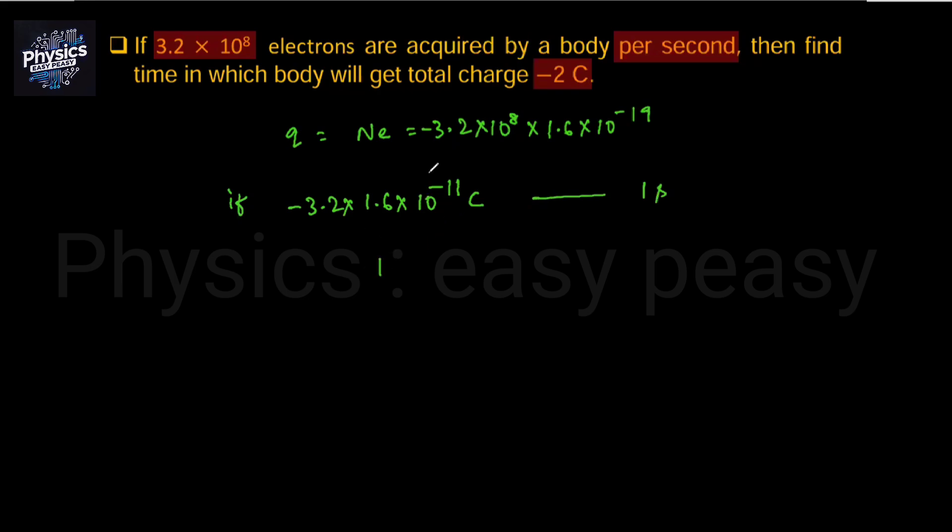If we generate 1 coulomb, then we divide. So we generate 1 coulomb in 1 divided by 3.2 into 1.6×10^-11 seconds. If we generate minus 2 coulomb charge, then we multiply by minus 2.